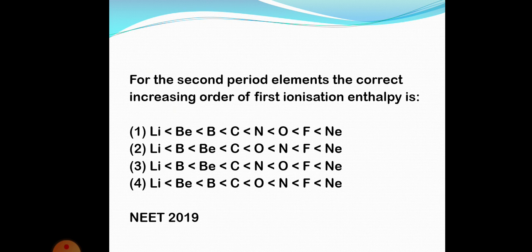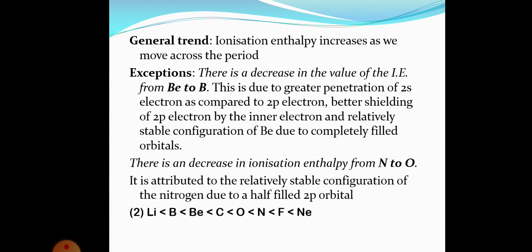However, there are some exceptions. There is a decrease in ionization enthalpy from beryllium to boron — even though we move left to right, ionization enthalpy decreases. This is due to the greater penetration of the 2s electron in beryllium compared to the 2p electron in boron, better shielding of the 2p electron by inner electrons, and the relatively stable fully-filled 2s² configuration of beryllium.